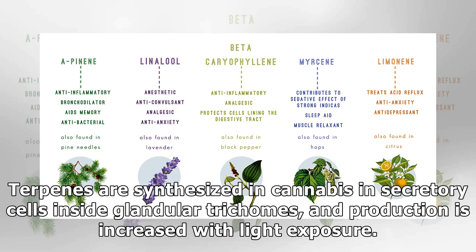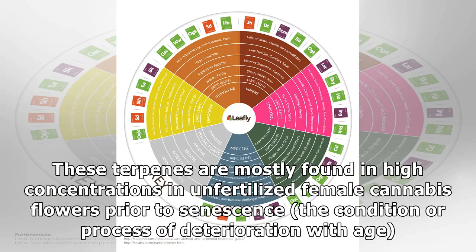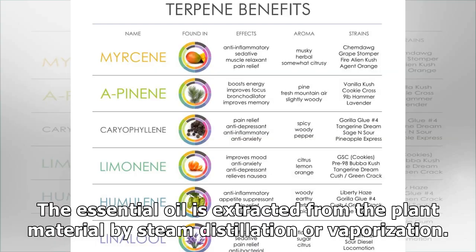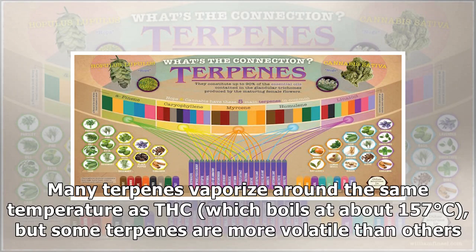Terpenes are synthesized in cannabis in secretory cells inside glandular trichomes, and production is increased with light exposure. These terpenes are mostly found in high concentrations in unfertilized female cannabis flowers prior to senescence. The essential oil is extracted from the plant material by steam distillation or vaporization. Many terpenes vaporize around the same temperature as THC, which boils at about 157°C, but some terpenes are more volatile than others.